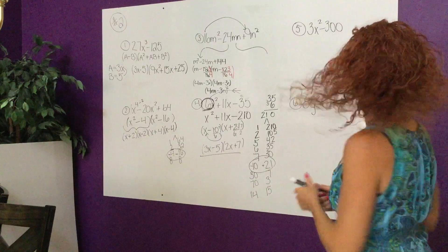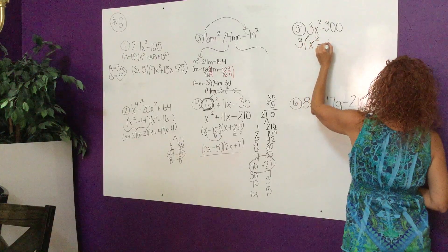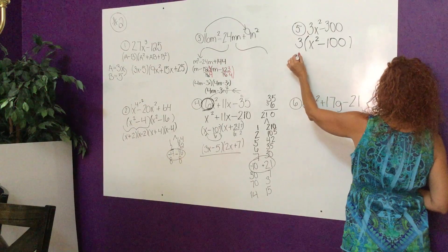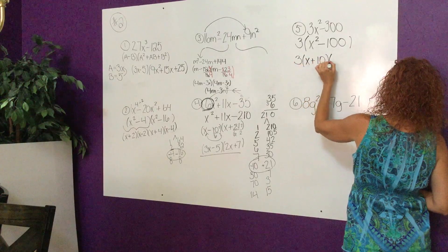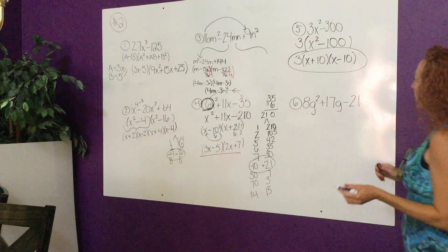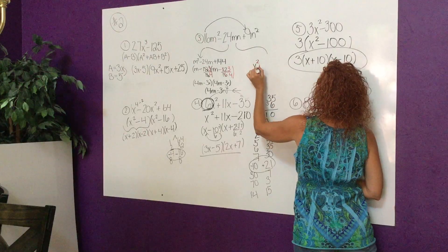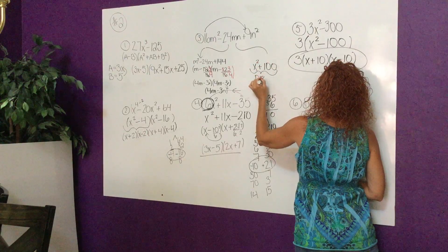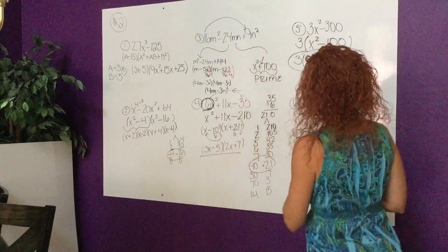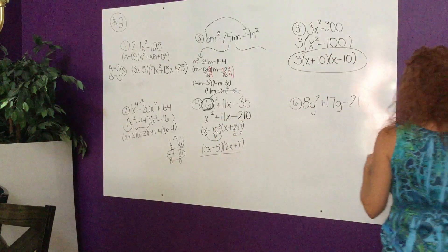Number five has a GCF. Hopefully you caught that. I'm going to pull that 3 out front. I'm going to recognize my perfect squares. 100 is 10 times 10 and that's a negative, so that really quick is 3(x + 10)(x - 10). And that wraps it up. Remember if it was like this, if you have a problem like this, this does not factor. So if it's positive it doesn't work, just a quick little reminder there.